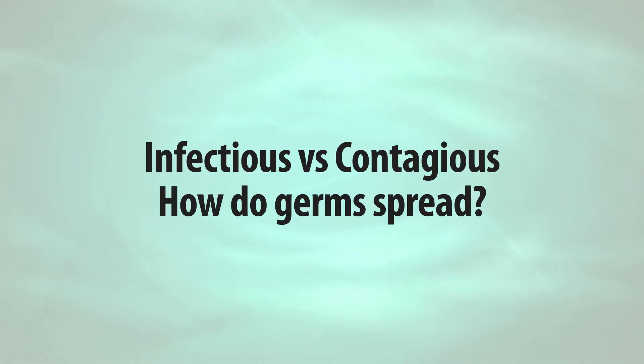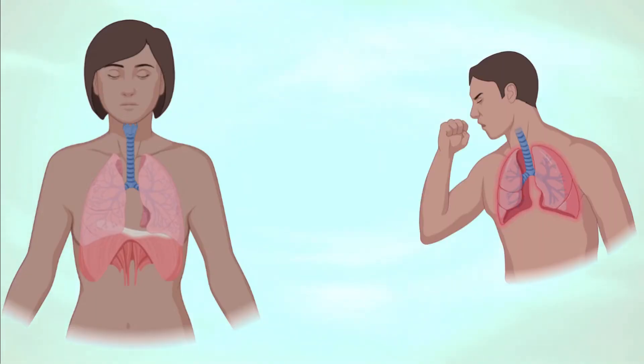Infectious versus contagious — how do germs spread? A contagious infection means the germs that grow in us while we're sick can spread to others and make them sick too. Some infections are very contagious, like I could get someone sick by just breathing in the same room as them. Most contagious germs need closer contact to spread, like a hug or a handshake, or if I touch something with my germy hands and then someone else touches it they could pick up my germs. Some infections can only be spread by contact with blood or other bodily fluids, like HIV, which can be spread by unprotected sexual contact or a contaminated needle.